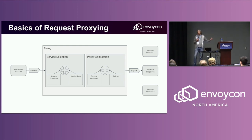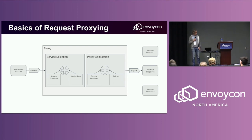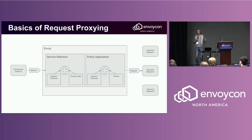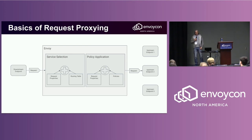a downstream client or endpoint. The first step is service selection, where Envoy takes the routing table and some properties of the request and then determines the route where the request has to go next.